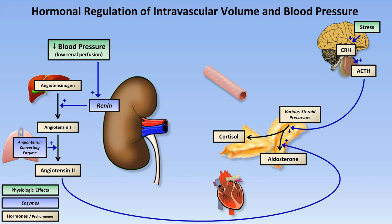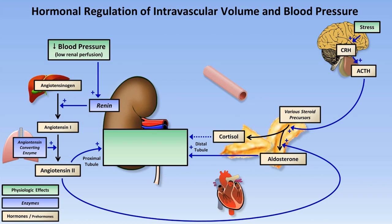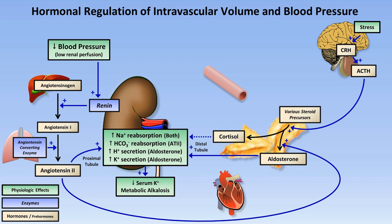Now, angiotensin 2 and aldosterone together, along with cortisol when in pathologic excess, have complex actions in the kidney and the proximal and distal tubule respectively. The most predominant results of those actions are sodium reabsorption caused by both, bicarbonate reabsorption caused by angiotensin 2, and potassium and hydrogen ion secretion by aldosterone. The last three of those four actions lead to hypokalemia and a metabolic alkalosis, which are often incidental to the major consequence of the sodium reabsorption, which is stimulation of water reabsorption. Water reabsorption expands the intravascular volume and helps to restore blood pressure.